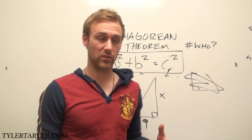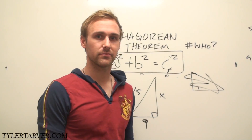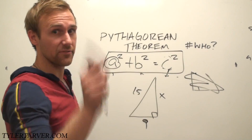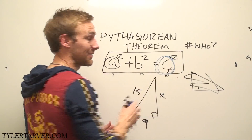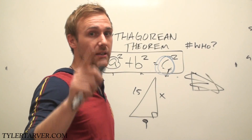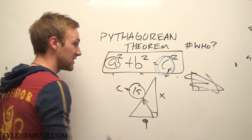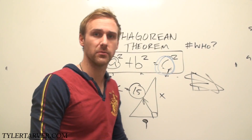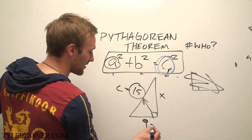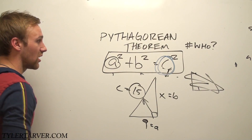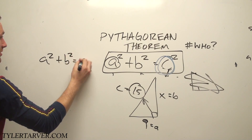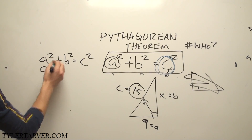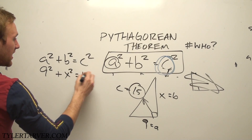By the way, you know that famous picture on the internet where it says 'find X' and someone circles it and goes 'here it is'? Well, that was on a right triangle — it's all connected. So let's find that X. First off, what's the most important part? What's the first thing I look for? My C — which is my hypotenuse — which is opposite my right angle. So 15 is C. We already know it equals 15 squared. A is 9, so 9 squared plus X squared equals 15 squared.